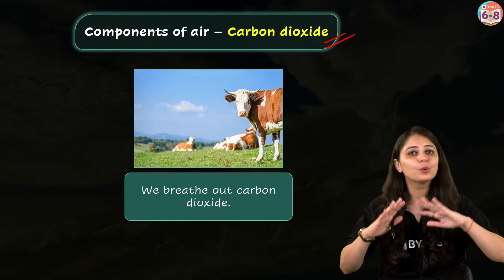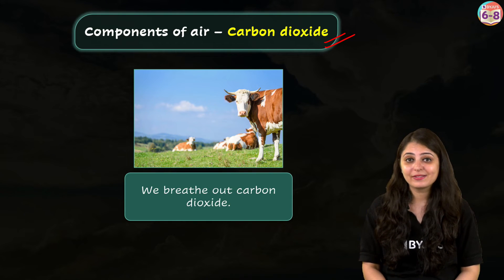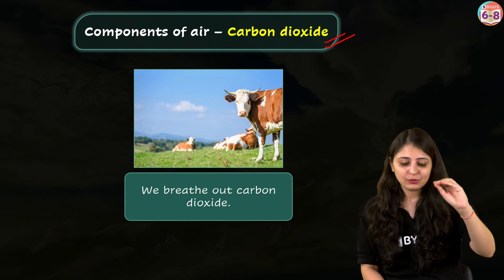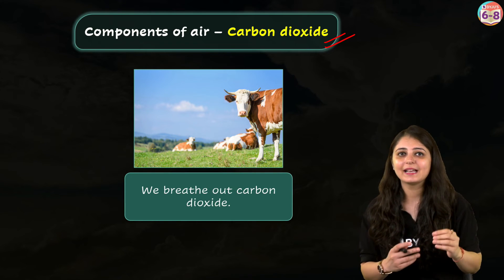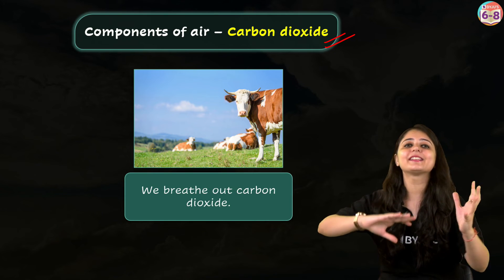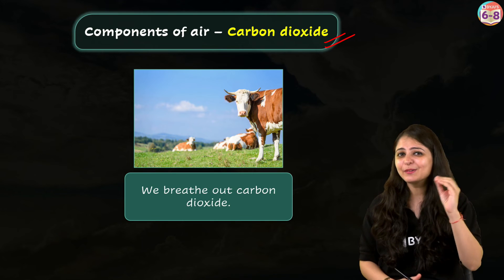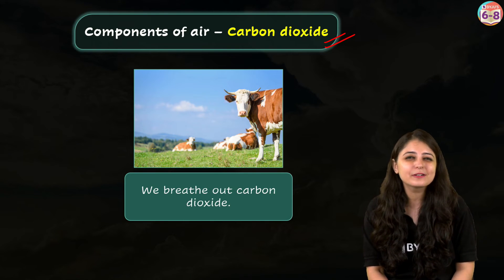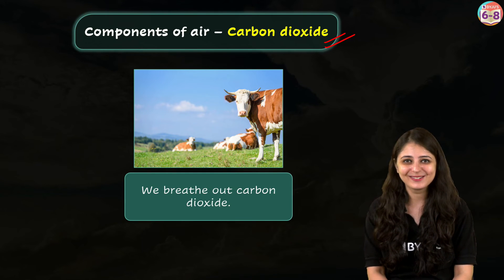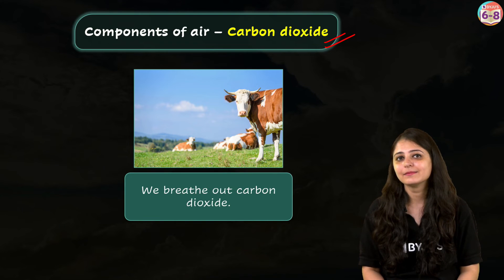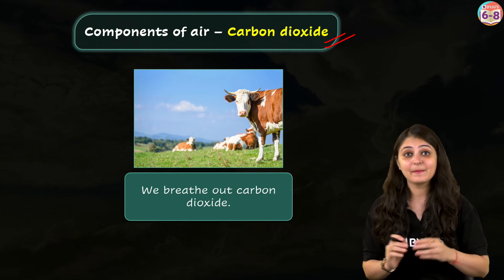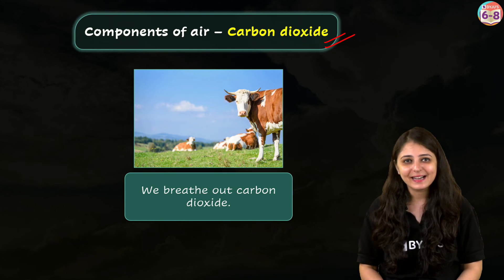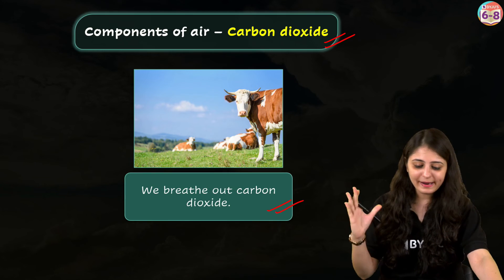Carbon dioxide keeps our planet warm just like a cozy blanket on a chilly night. But remember — it should not be in excess. Too much of this gas would make the planet extra warm. Also, have you ever seen bubbles in a soda or fizzy drink? Those bubbles are often carbon dioxide — it makes the drink bubbly and fun to sip. So carbon dioxide is a helper for plants, a warm blanket for our planet, and even a fun addition to our favorite drinks. But like all things, it's best in the right amount only.